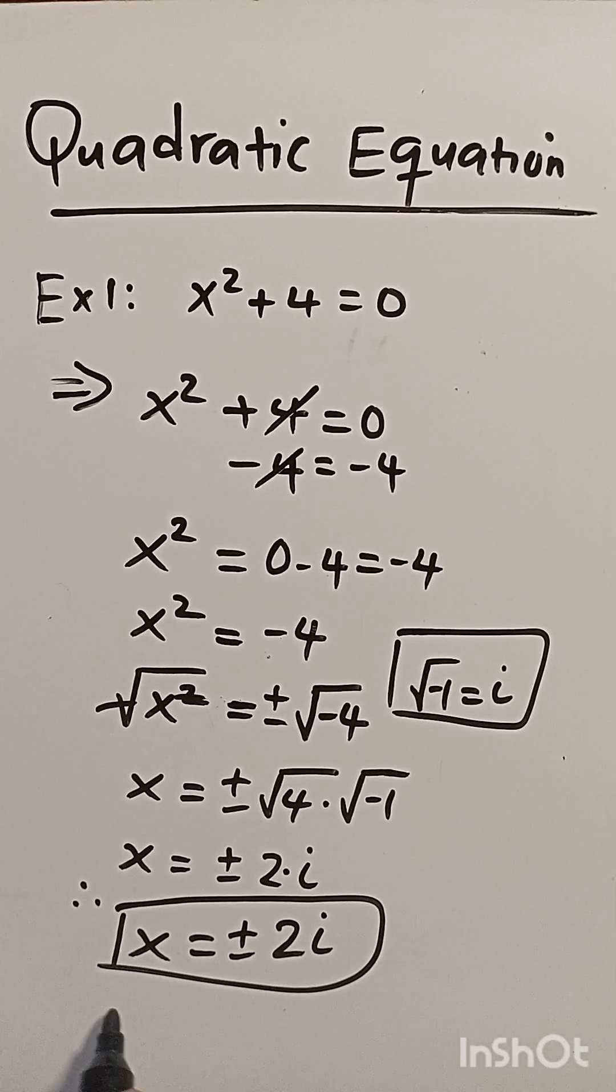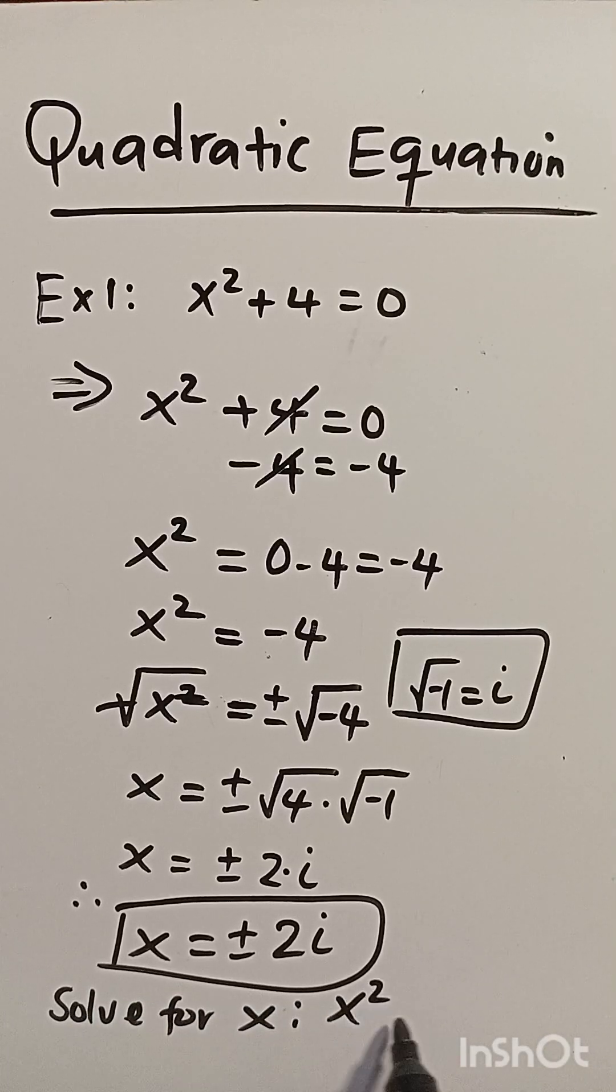Can you solve for this again? When we have x squared plus 9 equals 0, what will be the value of x?